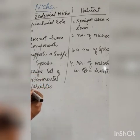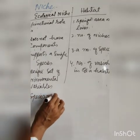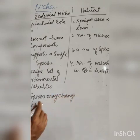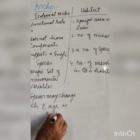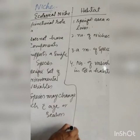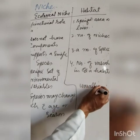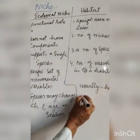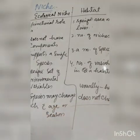A niche has a specific set of environmental variables, while a habitat has a number of variables or gradients in the environment. Also, a species may change its niche with age or season; however, usually the species does not change its habitat. This difference between ecological niche and habitat is a very important question from the examination point of view.